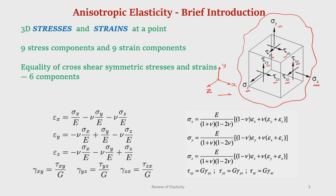On three mutually perpendicular planes we have 9 stress components, and similarly 9 strain components. The equality of shear stresses — tau_xy = tau_yx, tau_yz = tau_zy, tau_zx = tau_xz — means that only 6 independent symmetric stress components and corresponding 6 strain components are required.